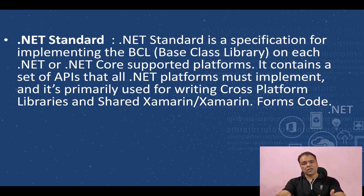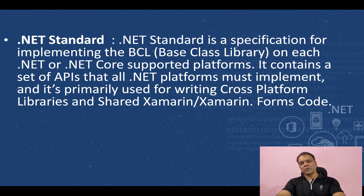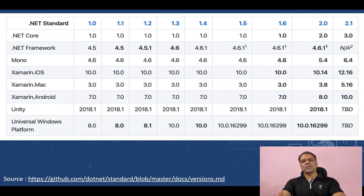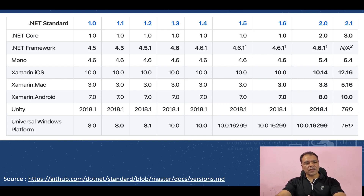Just as interfaces are a specification or blueprint that any class can implement, .NET Standard is a specification where all the features written in it are agreed upon to be implemented across all versions of .NET — whether .NET Framework, .NET Core, UWP, or Xamarin. You can see a table on the screen showing the .NET Standard version and which .NET frameworks support which version of .NET Standard.